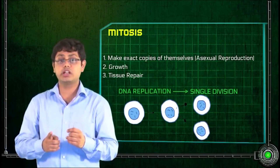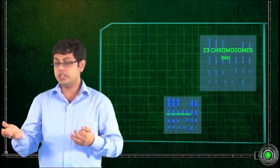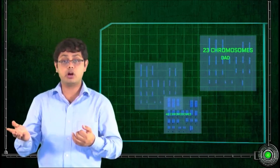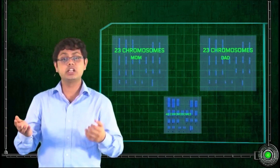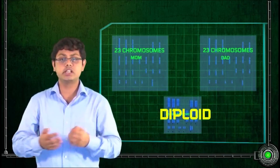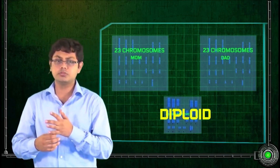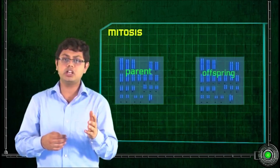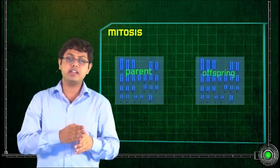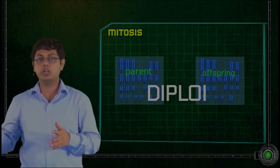As far as humans are concerned, we have 46 chromosomes — 23 come from your dad and 23 come from your mom. Such cells are called diploid cells, which means that they have a double set of chromosomes. During mitosis, the parent and the daughter cell are both diploid.